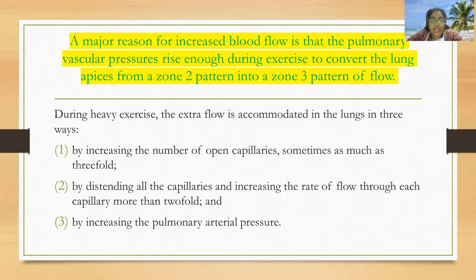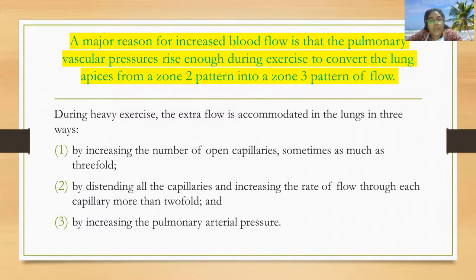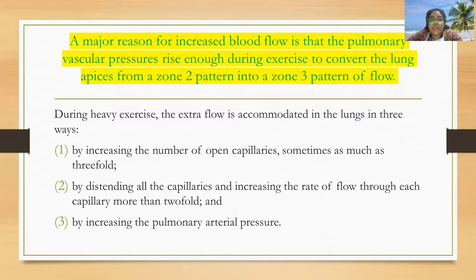During heavy exercises, the extra flow is accommodated in the lung in three ways: first, by increasing the number of open capillaries, sometimes as much as threefold; second, by distending all the capillaries and increasing the rate of flow through each capillary more than twofold; and third, by increasing the pulmonary arterial pressure.